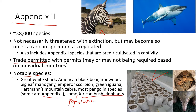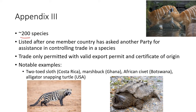You'll notice that the African bush elephant — one species — can have different populations on Appendix One or Appendix Two depending on how that population is doing. Appendix Three is small at about 200 species. It's used when one member country asks another for assistance in controlling trade of a specific species. For example, Ghana might ask neighboring countries to help stop trade in marsh buck. The U.S. has asked member countries to stop import of alligator snapping turtles, which are sold on the international pet trade. Trade is permitted but requires a valid export permit and certificate of origin.